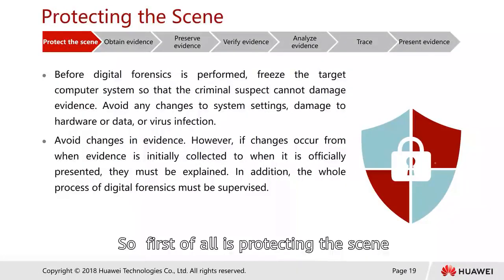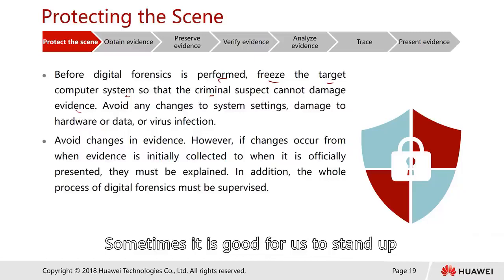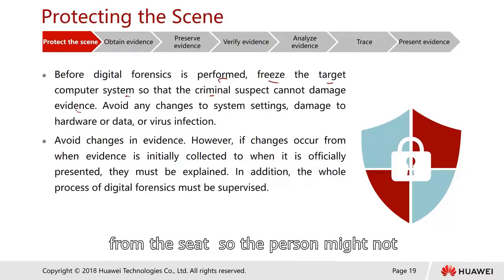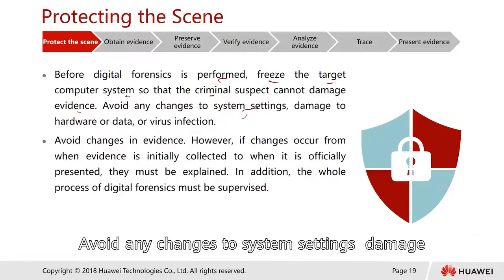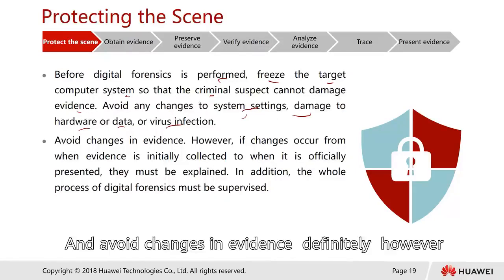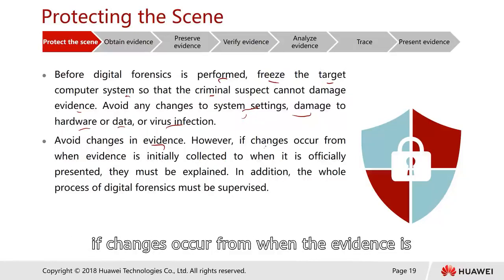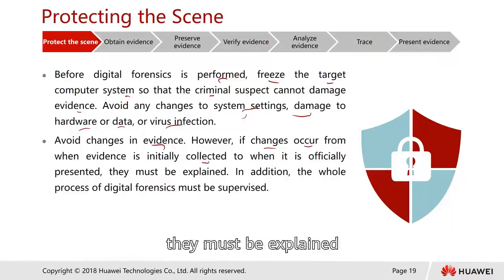Protecting the scene: before digital forensics is performed, we have to freeze the target computer system so that the criminal suspect cannot damage the evidence. Sometimes it is good to ask the person to step away from their seat so they might not be able to delete or format the entire machine — to avoid any changes to system settings, hardware damage, data damage, or virus infection. However, if changes occurred from when the evidence is initially collected to when it is officially presented, they must be explained.